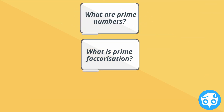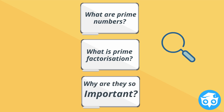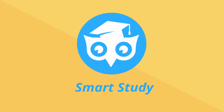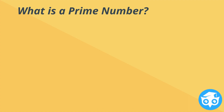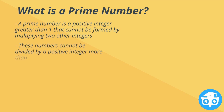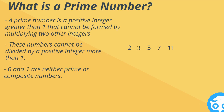What are prime numbers? What is prime factorization? Why are they so important? A prime number is a positive integer greater than 1 that cannot be formed by multiplying positive integers together. These numbers cannot be divided by any integer more than 1. Note that 0 and 1 are neither prime nor composite. Examples of prime numbers are 2, 3, 5, 7, and 11.